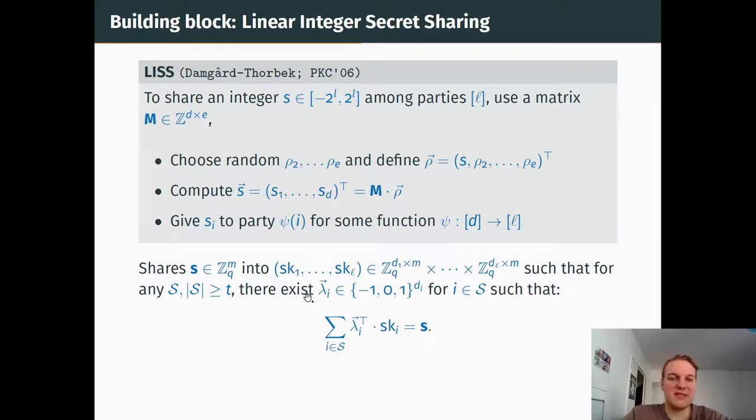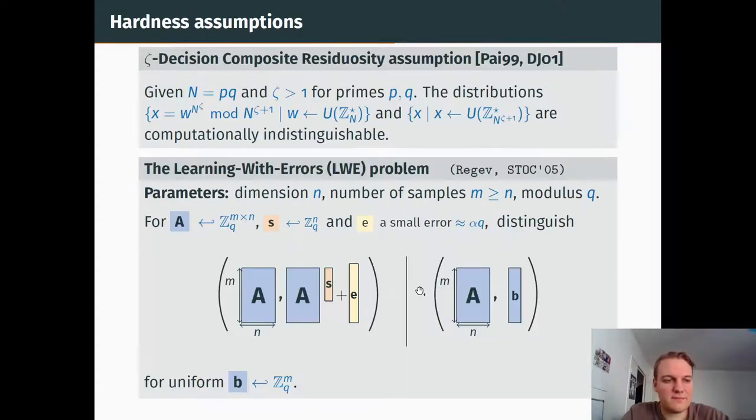It has the following nice property. If I take any subset which has at least T elements out of L, then there exists a reconstruction vector whose coefficients are small, so small that actually it's minus one, zero, or one, such that if I multiply the key share on the left by the reconstruction vector and sum all vectors that I get like that, I find the secret back.